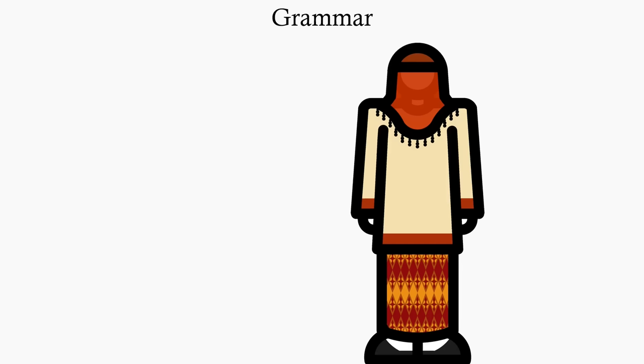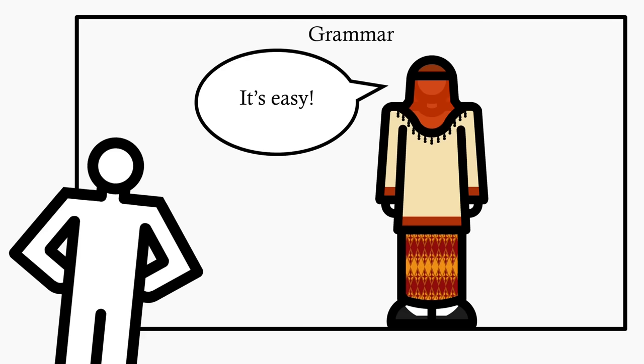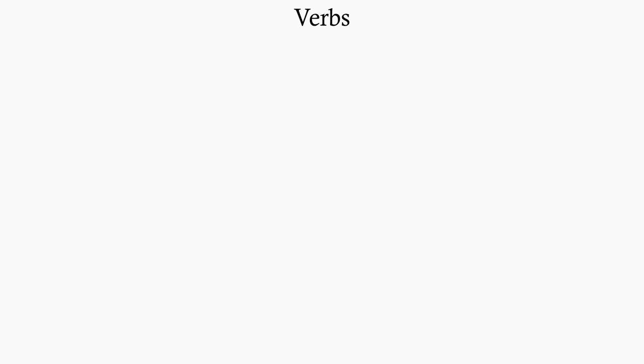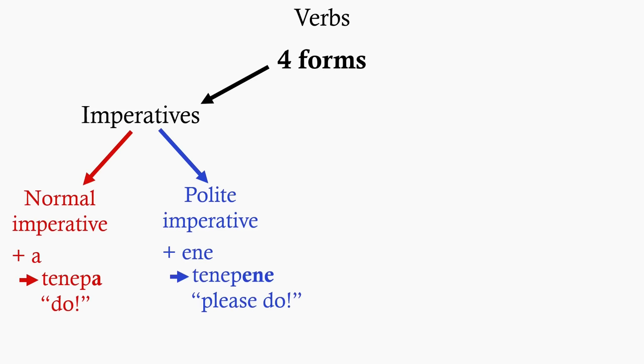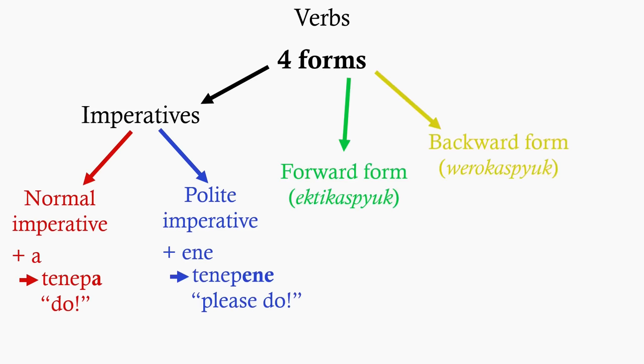Grammatically Meandgar is, again, fairly simple, but it's still a language. Verbs are conjugated in four forms from the stem, two of these are imperatives, with the regular imperative adding a to the stem, as in tenepa, do, and the imperative ending enne, as in tenepene, please do.